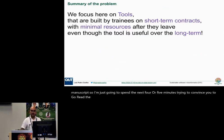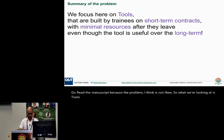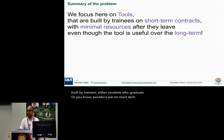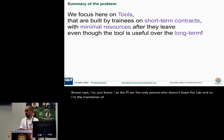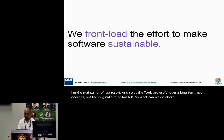The problem is not new. We're looking at tools — code that we release for other people to use on their problems — and they're built by trainees, either students who graduate or postdocs on short-term contracts. Once they leave, as Titus Brown says, I as the PI am the only person who doesn't leave the lab, so I'm the maintainer of last resort. Tools are useful over the long term, even decades, but the original author has left. So what can we do about this?